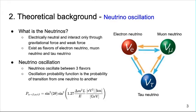This slide explains what neutrinos are and how they oscillate. The neutrino is electrically neutral and interacts with other particles only through the gravitational force and the weak force. They exist in three different flavors called electron neutrino, muon neutrino, and tau neutrino. Neutrinos keep changing their flavor from one to another in a process called neutrino oscillation. This oscillation can be explained as a function of probability and we call it the oscillation probability function.